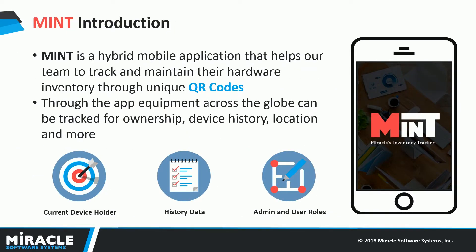Mint is a cross-platform application that enables seamless tagging of expensive equipment by making use of QR codes. Mint allows administrators to add or edit item information, whereas all users can see the equipment and gain information about the history of ownership — all this by just scanning a QR code. Simple, isn't it?